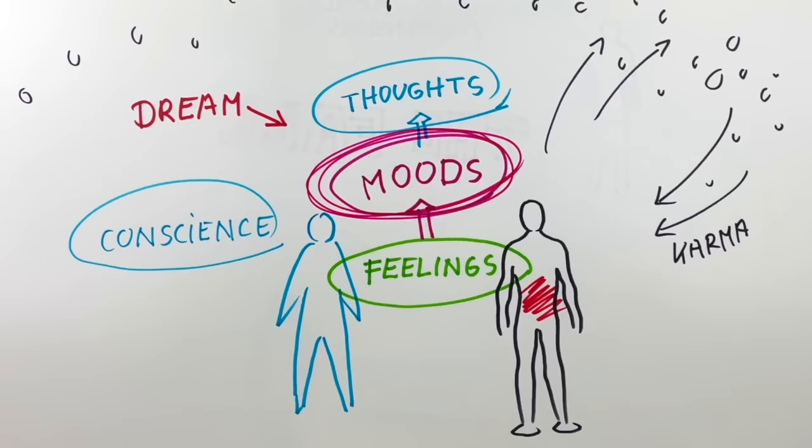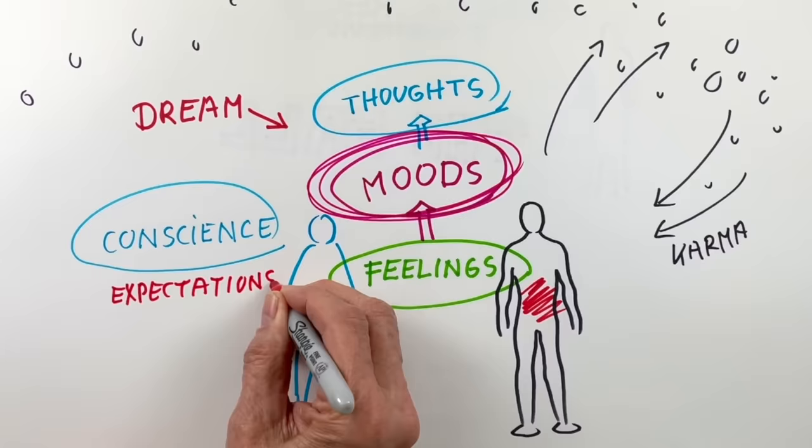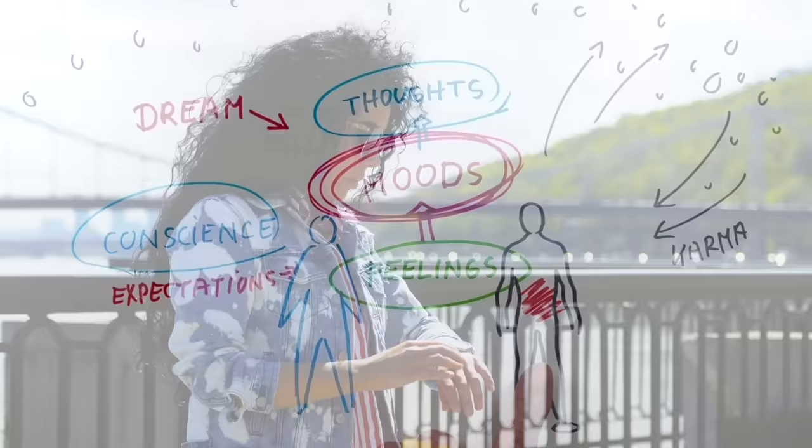But here are two other important aspects that always put us in negative moods. One of them are all our expectations that we constantly put on other people or on life, on God or even on ourselves. We want something for ourselves and ultimately at the expense of the energy of other people. Expectations means overriding the free will of others and thereby stealing their energy.